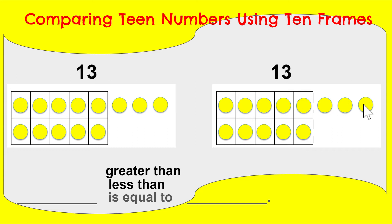So now I have 13 and 13. Now I have to decide — we have to compare them. Is 13 greater than 13, is 13 less than 13, or is 13 equal to 13? Shout it out! Very good. 13 is equal to 13. You might have said you can see that both groups have a 10 frame all filled and both groups have three extra. The number 13 and the number 13 are the same — that means they are equal. Equal means the same. If I gave them each a partner, we would see that they all had a partner.